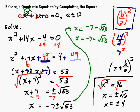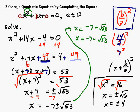Those are your two answers. If you wanted a decimal approximation, you would get the decimal for the square root of 53, round it to wherever you need to, then add negative 7 or do negative 7 minus that decimal for your two answers. That's a little introduction to completing the square — look for part 2 where I'll do a couple more examples.